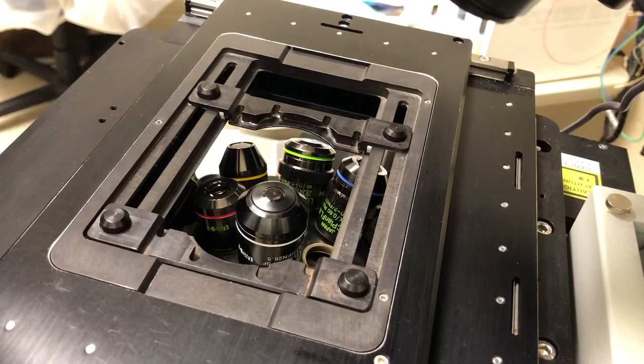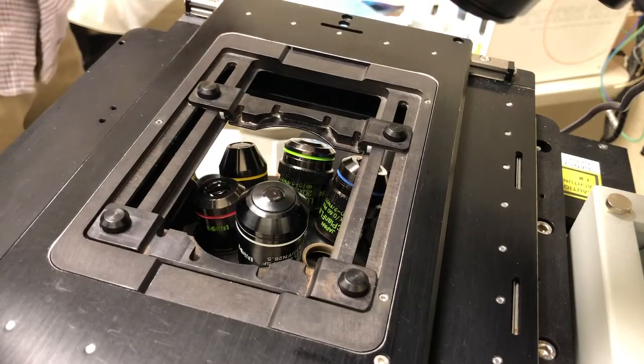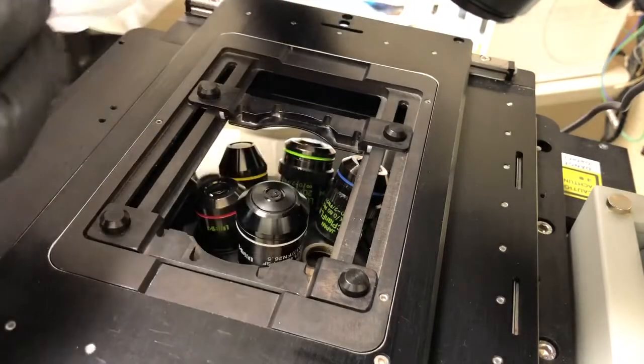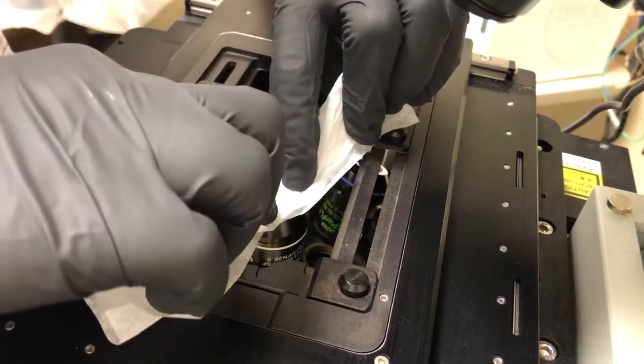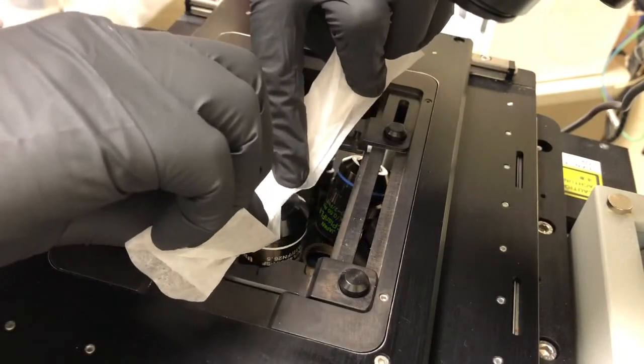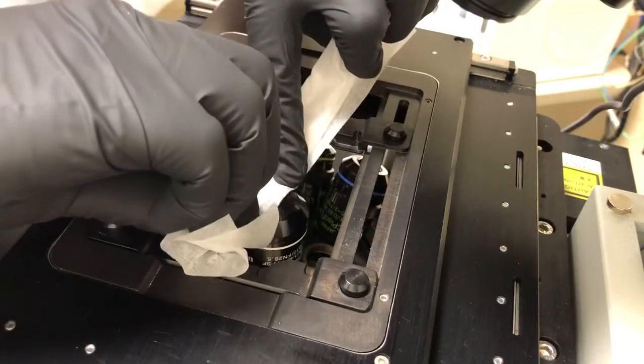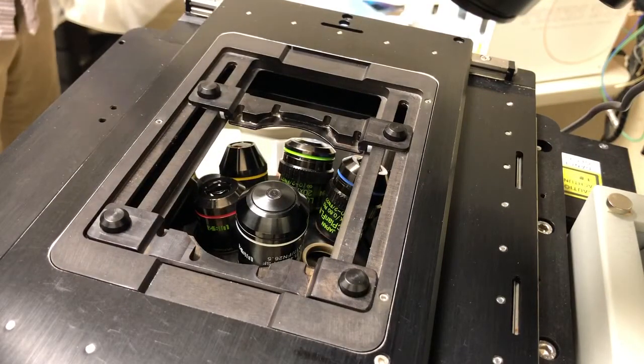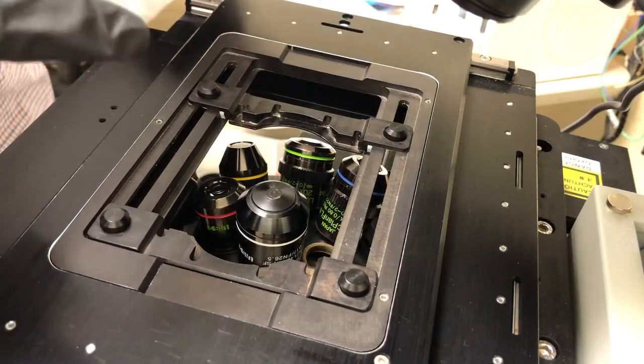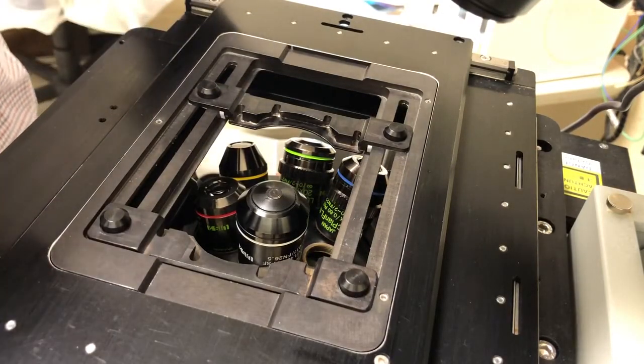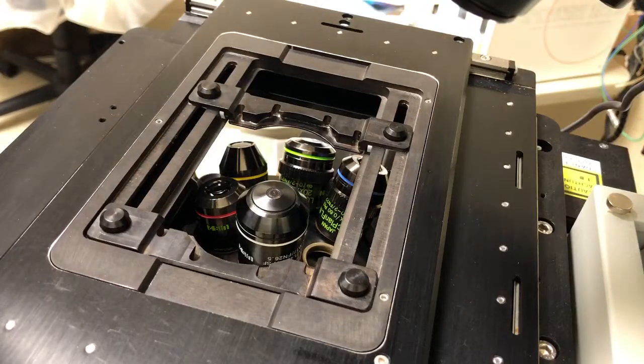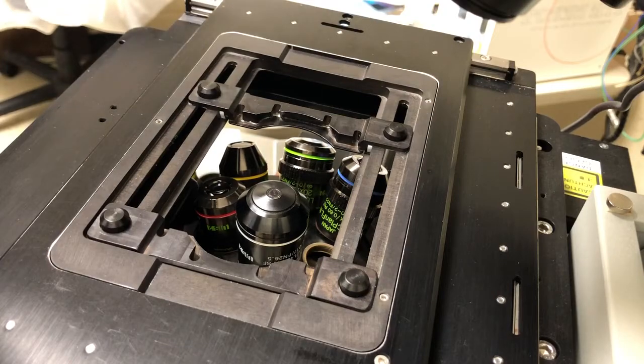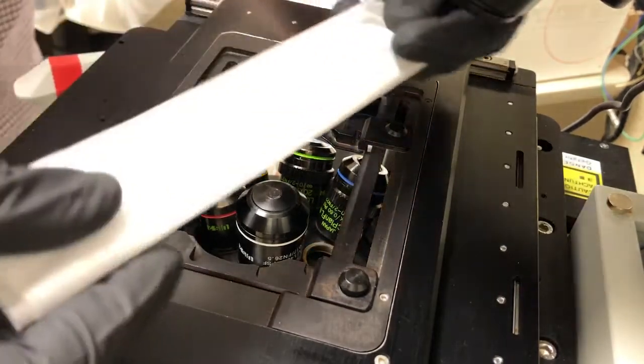The next step is to clean the objective. To do that, get lens paper, fold it, and gently wipe across the objective's face. Next, we'll use lens paper with ethanol or 70% ethanol. I've discovered that 70% works a little better, so we'll use that. We'll put a little bit on it like this, and then swipe across like that.